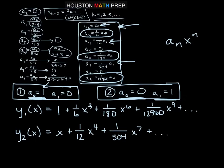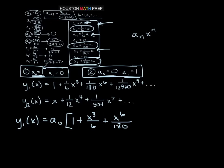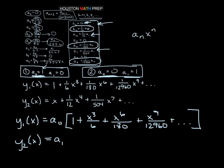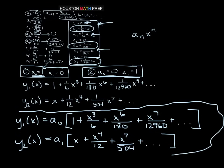Going back to the general form, y sub 1 of x is really a sub 0 times the quantity 1 plus x cubed over 6 plus x to the 6 over 180 plus x to the 9 over 12960 plus dot dot dot. And y sub 2 of x is a sub 1 times x plus x to the 4th over 12 plus x to the 7 over 504 and so on. These are our two power series solutions to the Airy's equation.